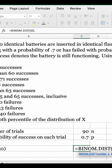Now it's asking us for a trial. So the question here says that there were 90 trials. So we're going to put 90.